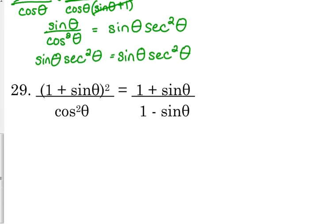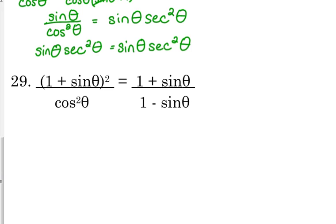Any questions about that one? I'm going to do one more with you. I'm going to do number 29. We've got one plus sine of theta squared over cosine squared of theta is equal to one plus sine of theta squared over one minus sine of theta. I don't think I said that right. But anyways. So, I'm actually going to work on the right side of this one.